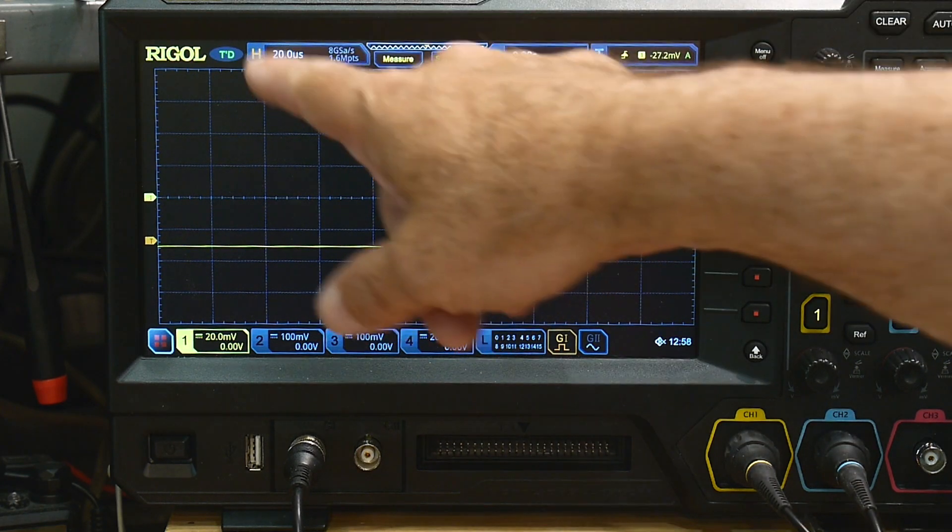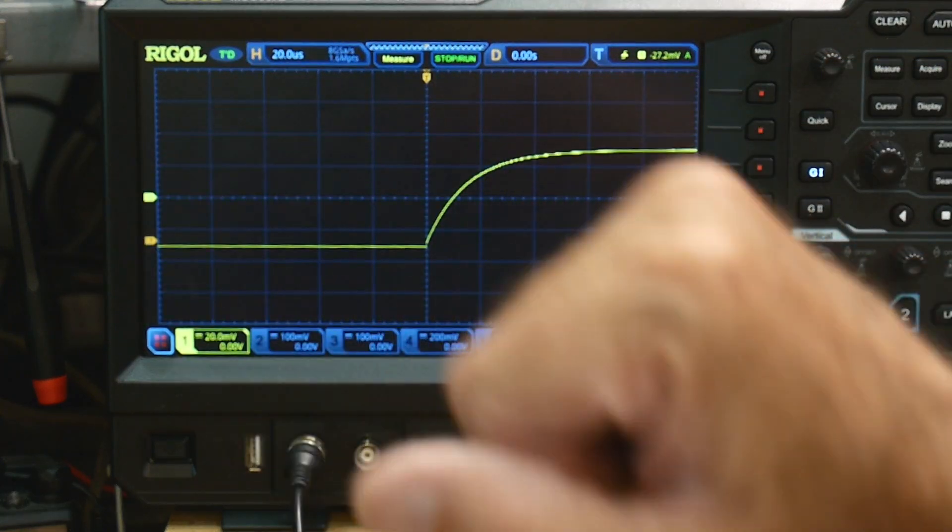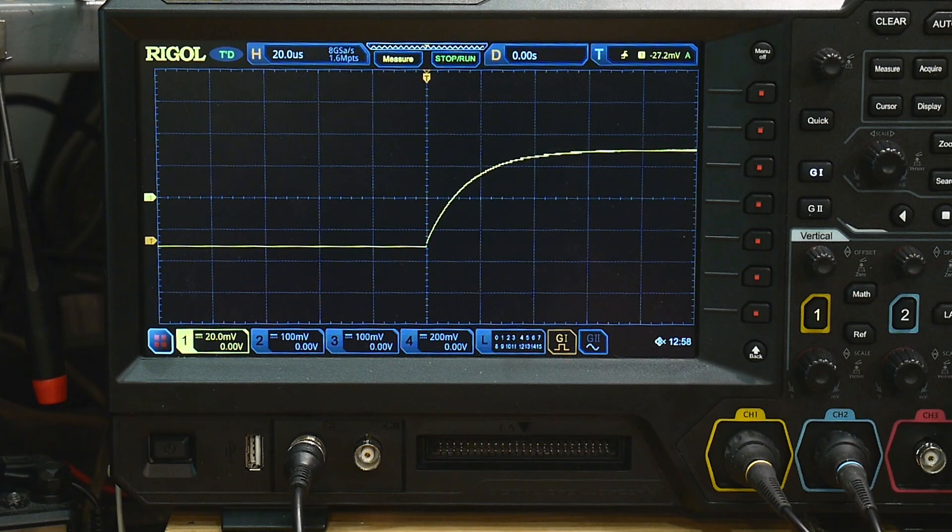There we go. We'll do that one, so 20 microseconds per division, so 20, 40, 80, something like that.